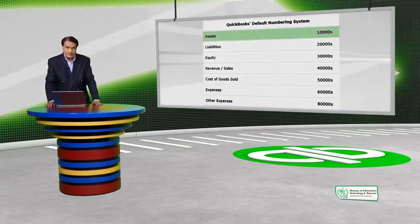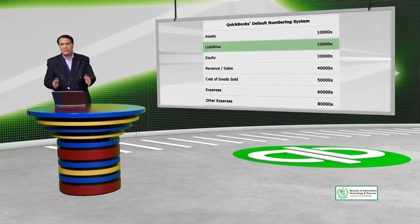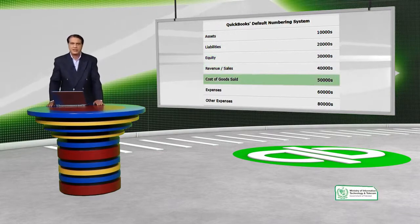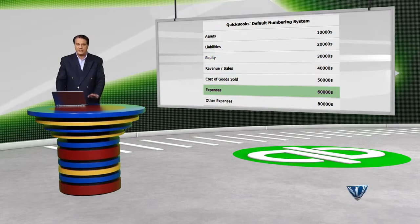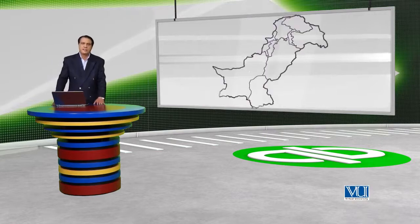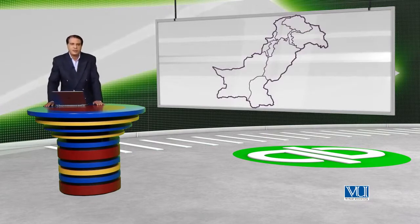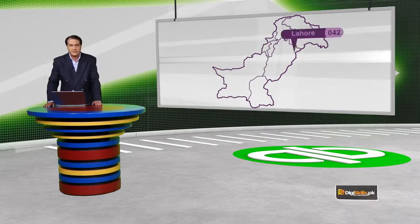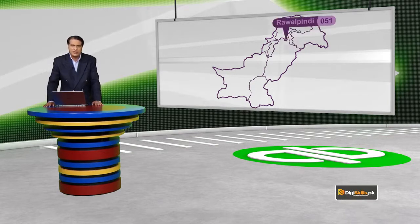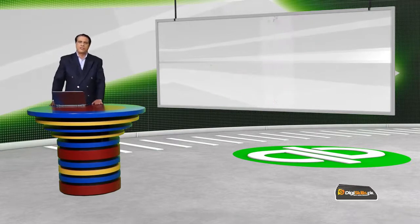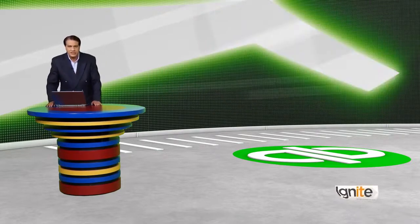Yeh listing joh aap pichhe mein dekh rahe hain, yeh QuickBooks ki numbering system hai. Is numbering system se humein yeh pata chalta hai ke hamare tamam is type ke accounts in numberon ke andar aate hain. Isi ki misal is tarah se hai — pura Pakistan mein jahan telephone ki dialing allowed hai, woh mukhtalif number se start hoti hai. Jis tarah Lahore 042, Rawalpindi/Islamabad 051, Karachi 021. Yeh numbering scheme isliye zaroori thi taa ke hum pehle teen digit dekh ke andaza laga sakein ke yeh kaun sa region ya ilaqa hai.